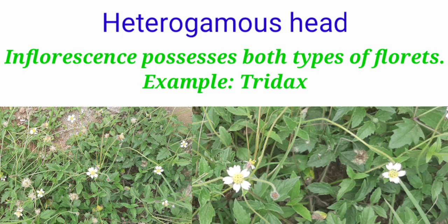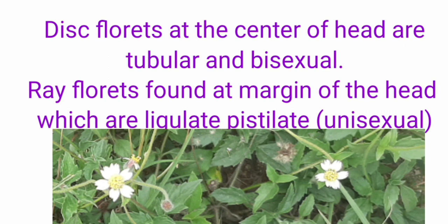At the center point where it is yellow in color you could find the disc florets which is tubular and contains the bisexual florets and the lateral side that is white color which is present in the margin of florets is the ray florets which is ligulate, pistillate and unisexual.